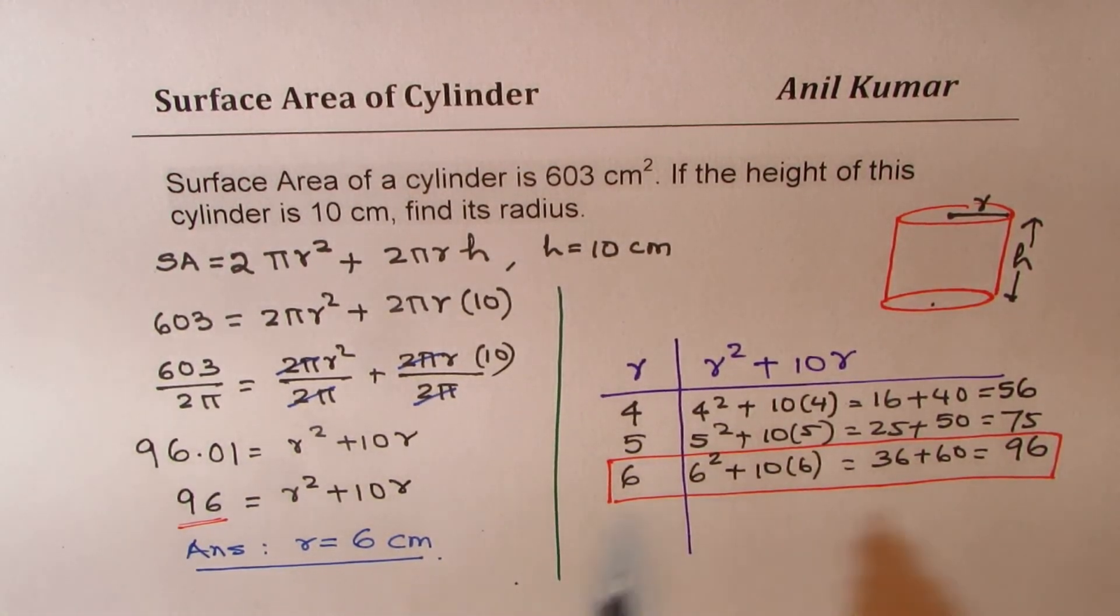Perfect. So that is how you can find radius from the given surface area by working backwards. So we just substitute different values of r to estimate the answer. And we got exact value, almost 6, which gave us the answer of this particular question. So I hope this strategy really helps you to think and see how we can solve such questions.